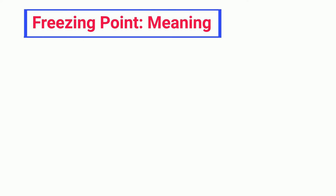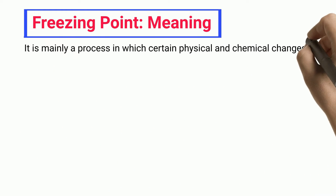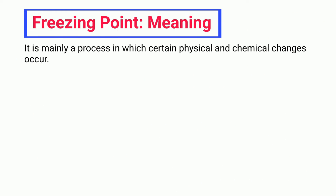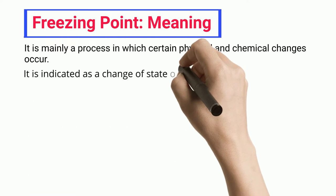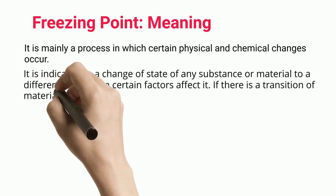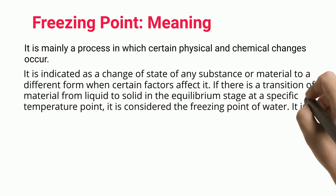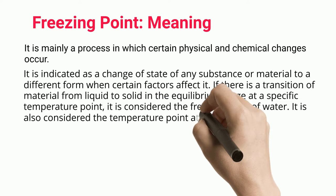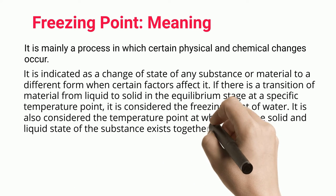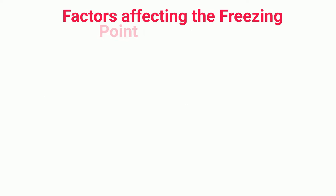Freezing point refers to a process in which certain physical and chemical changes occur. It is indicated as a change of state of any substance or material to a different form when certain factors affect it. If there is a transition of material from liquid to solid in the equilibrium stage at a specific temperature point, it is considered the freezing point. It is also the temperature at which both the solid and liquid state of the substance exist together in equilibrium.